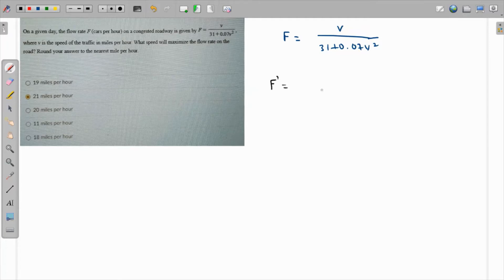F' using the quotient rule is: denominator times differentiation of numerator (which is 1) minus numerator times the differentiation of the denominator. The differentiation of 31 is 0, and 0.07 remains as it is, and the differentiation of V² is 2V.